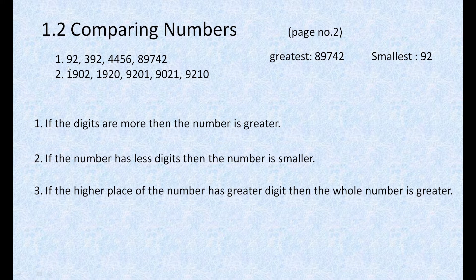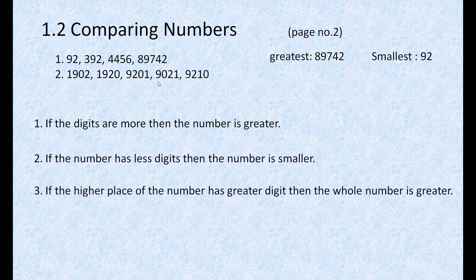Here, in the first number, the higher place is the 1000s place, which contains 1 as the digit. The second number's 1000s place also has digit 1. The third number's highest place is 1000, which has 9 as the digit. The fourth number's 1000s place has digit 9. The fifth number's 1000s place also has 9. Since 9 is greater than 1, these three numbers are the highest compared to the first two.